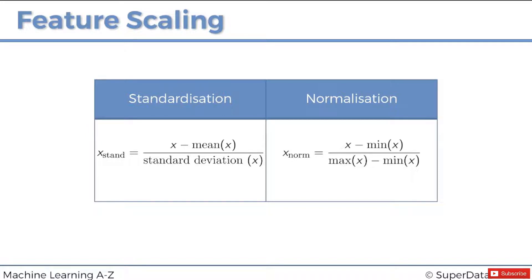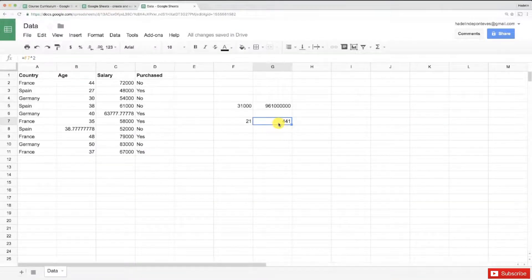There are several ways of scaling your data. A very common one is standardization, which means that for each observation and each feature, you subtract the mean value of all the feature values and divide by the standard deviation. Another type is normalization, which means you subtract the minimum value of all the feature values and divide by the difference between the maximum and the minimum. What you need to understand is that we are putting our variables in the same range and the same scale so that no variable dominates the other.